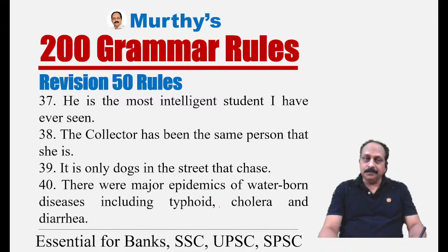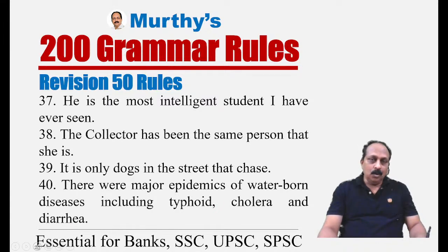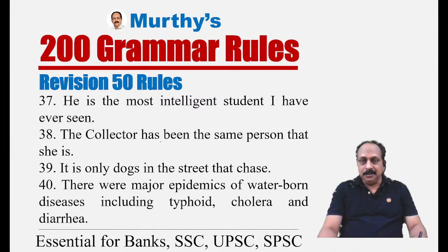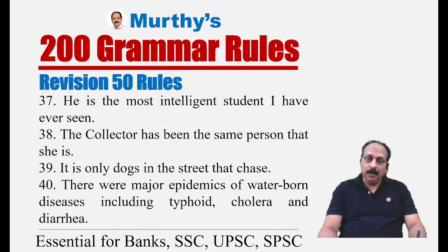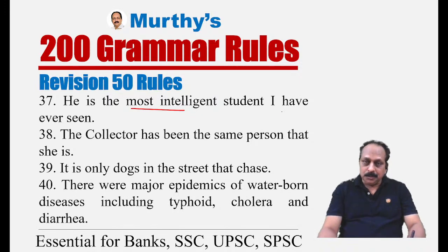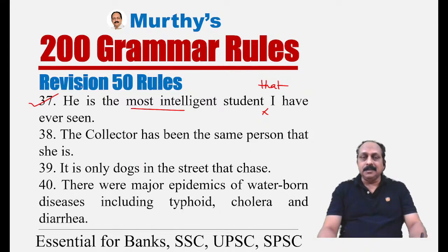Sentence thirty-six (marked as 37 in session): 'He is the most intelligent student I have ever seen.' Whenever an adjective is in the superlative form, we must use the relative pronoun 'that.' The correct sentence: 'He is the most intelligent student that I have ever seen.' Similarly, words like 'same,' 'only,' 'all' also require the relative pronoun 'that.'